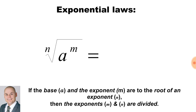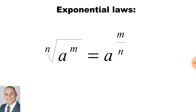Now we have a root sign. If the base a and the exponent m are to the root of an exponent n, then the exponents m and n are divided. Therefore, in order to simplify and get rid of the root sign, it would be the base a to the exponent of m over n.